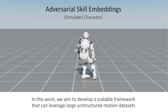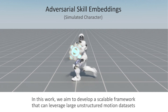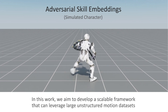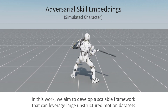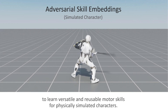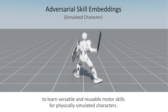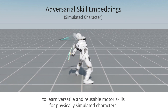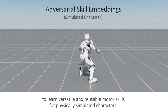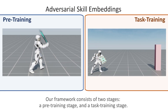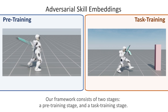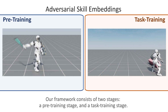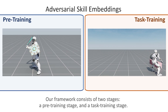In this work, we aim to develop a scalable framework that can leverage large unstructured motion datasets to learn versatile and reusable motor skills for physically simulated characters. Our framework consists of two stages: a pre-training stage and a task training stage.